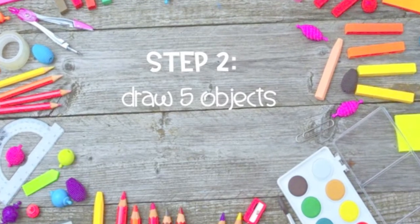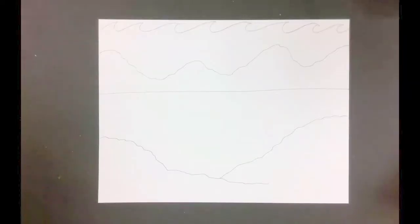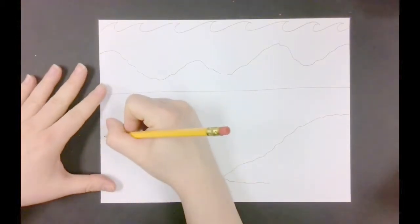Now we need to draw five objects to decorate our ocean. I'm going to start with some seaweed. Use the pictures in your Seesaw to help you think of ideas. Remember you need to have five.